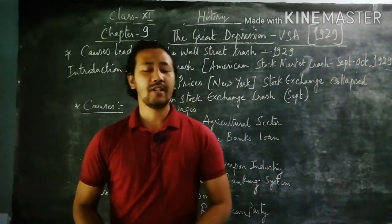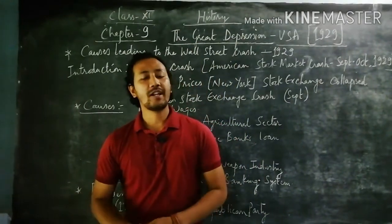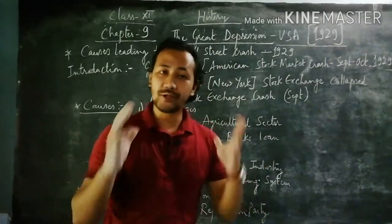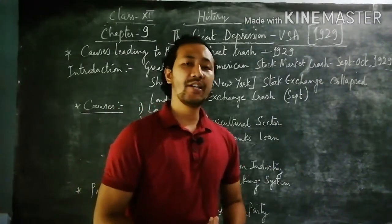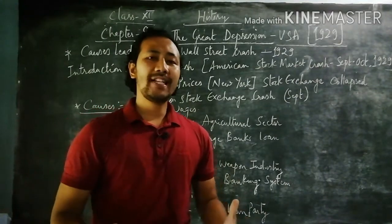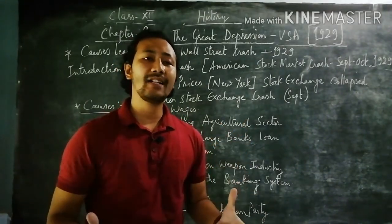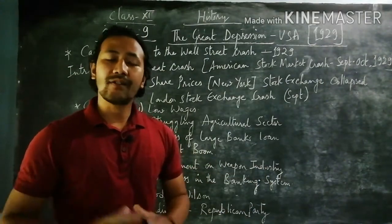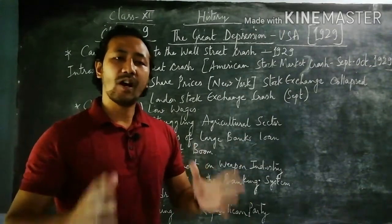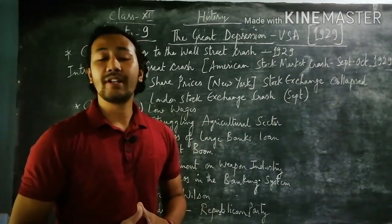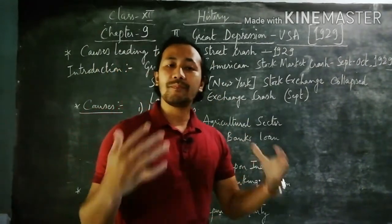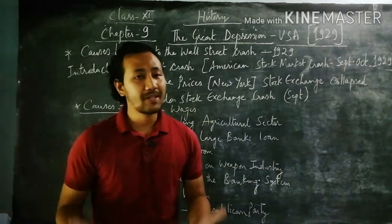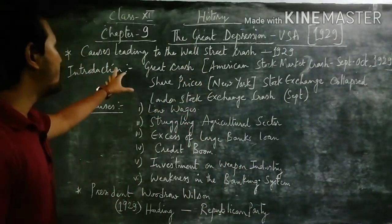Hello, my dear students. I welcome you all to your history online class. In today's online class we will focus on the ninth chapter from your international or contemporary history, known as the Great Depression of the USA — the United States of America — in the year 1929. There were lots of causes and reactions when the Wall Street Crash occurred, mainly in the month of September, ending in October 1929. Many people of America had to face problems regarding the stock market exchange, which went really down, leading to unemployment and bank closures.